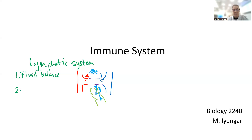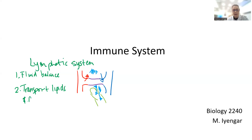And at the same time, because you have these large one-way valves, you can actually pick up fats and fat-soluble items. So the second function is to transport lipids — fats and anything that's fat-soluble.